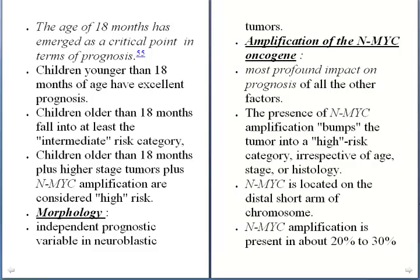Children older than 18 months fall into either the intermediate or high-risk category, especially if they have MYCN amplification. The morphological changes — specifically the presence of schwannian stroma — are independent prognostic variables in neuroblastic tumors. The most profound prognostic factor is the amplification of the MYCN oncogene.